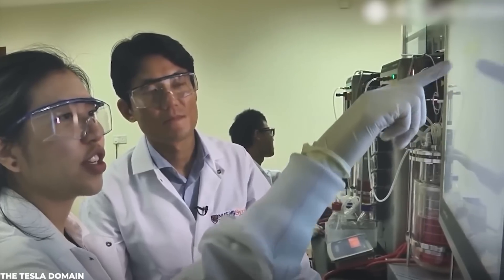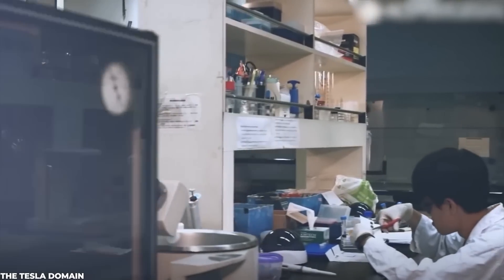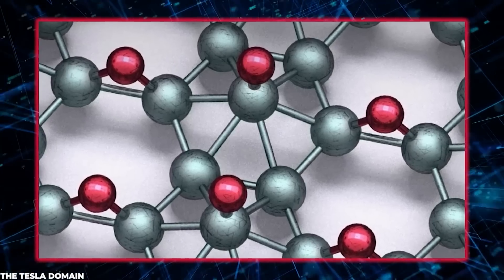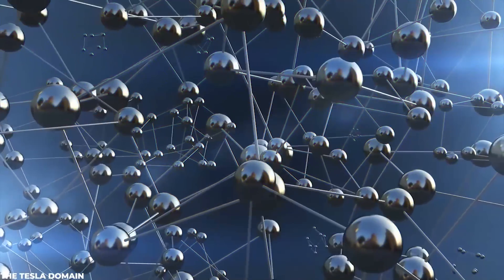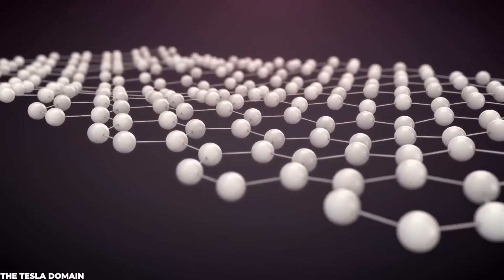Although each boron atom should theoretically form bonds with six more atoms, in practice, they typically only do so with four to five. It is the presence of voids in borophene crystals that distinguishes them.